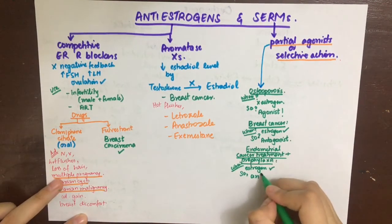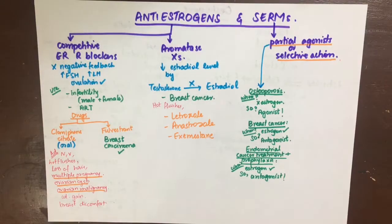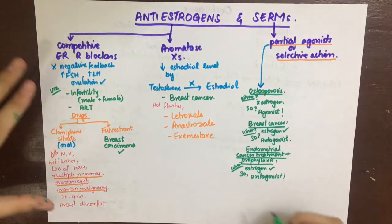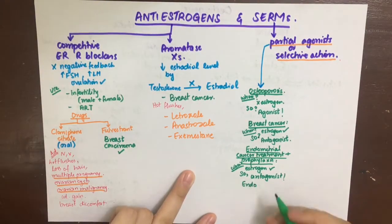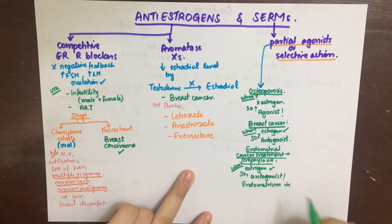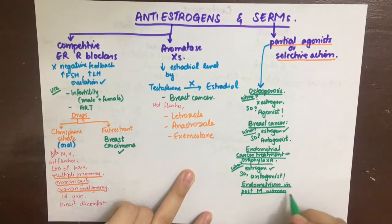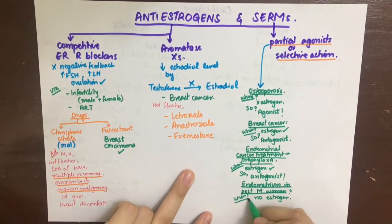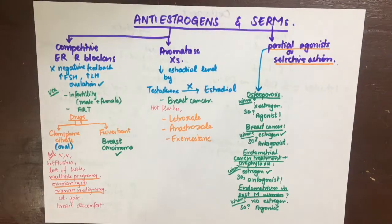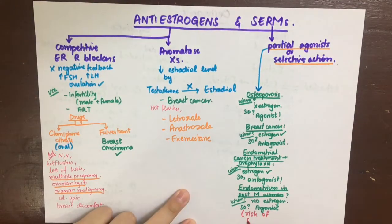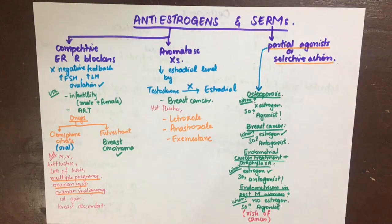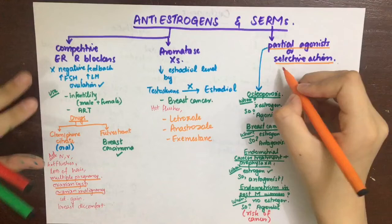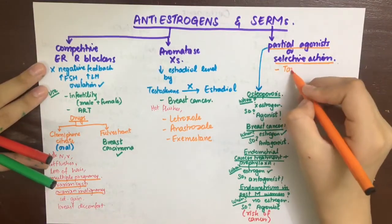To explain a side effect using the partial agonist concept: if SERMs are used in a postmenopausal woman, there is no estrogen, so in its absence SERMs act as agonists and thus increase uterine proliferation — raising the risk of endometrial cancer. The SERMs include tamoxifen, raloxifene, and ormeloxifene.